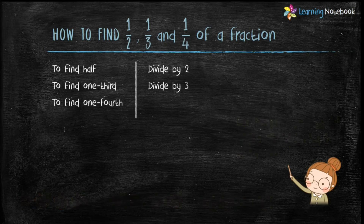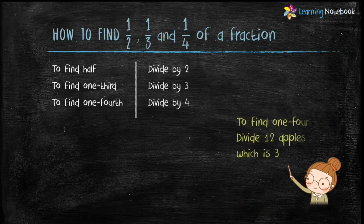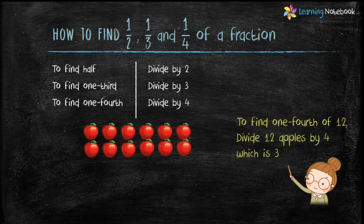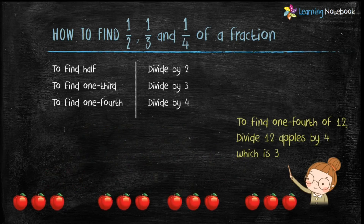To find one-fourth of a number, divide by 4. For example, to find one-fourth of 12 apples, divide 12 by 4, which is equal to 3. This is how we find half, one-third and one-fourth of a number.